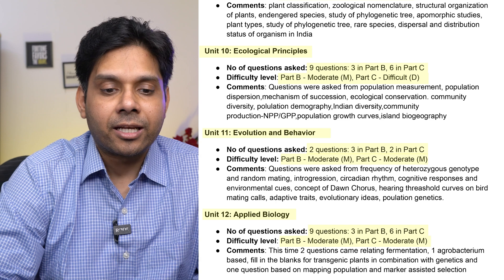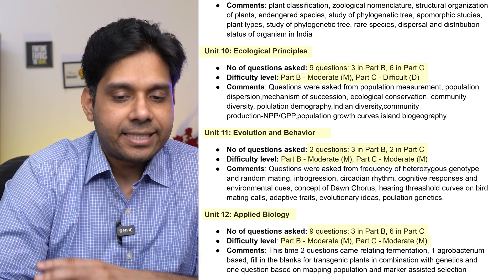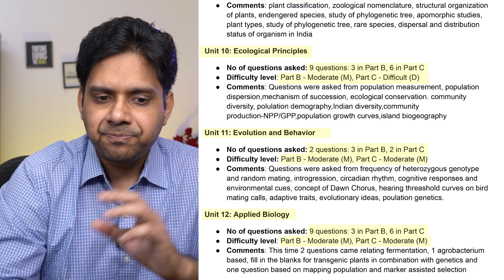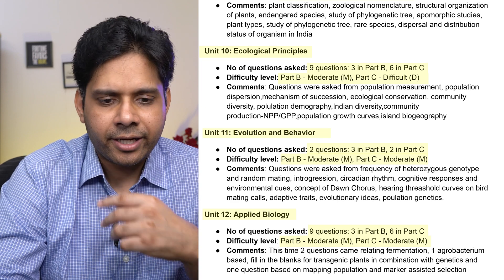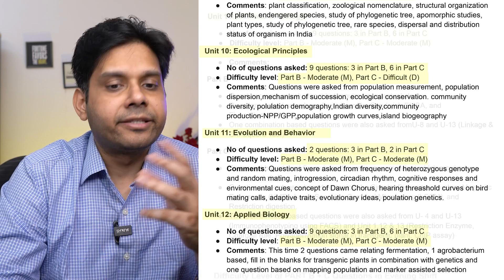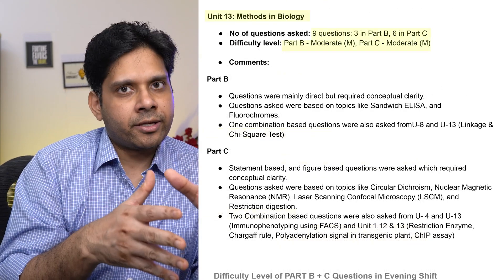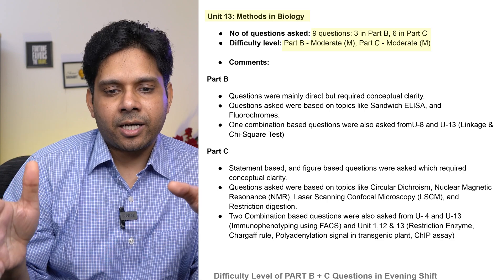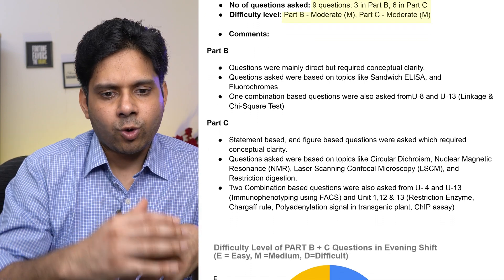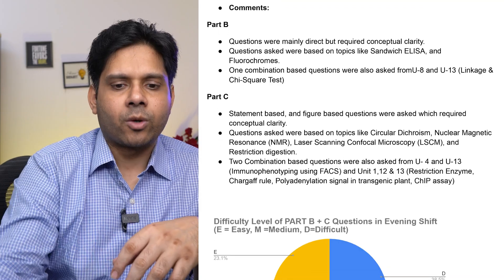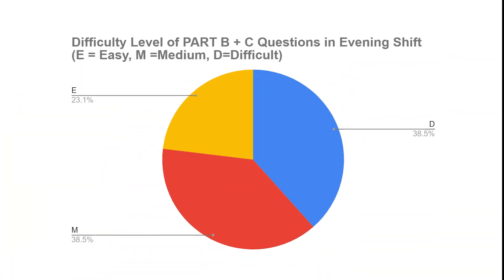Unit 12, Applied Biology in the evening shift, had nine questions — three in Part B and six in Part C. Both Part B and Part C were moderate. Unit 13, Methods in Biology, had nine questions — three in Part B and six in Part C — with both parts moderate.